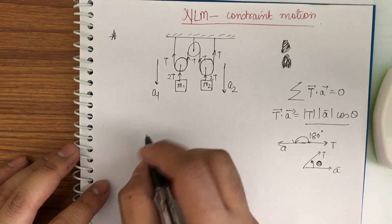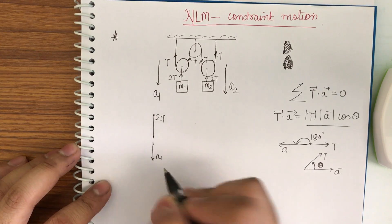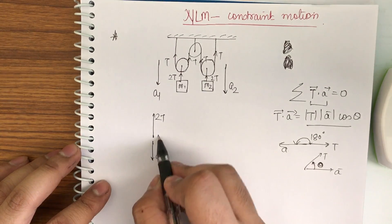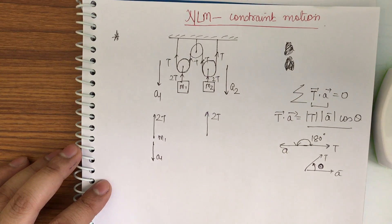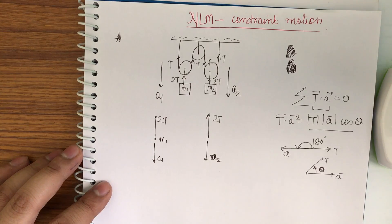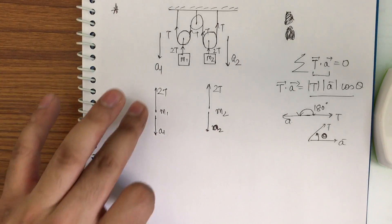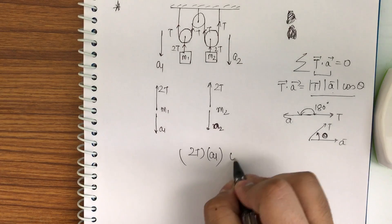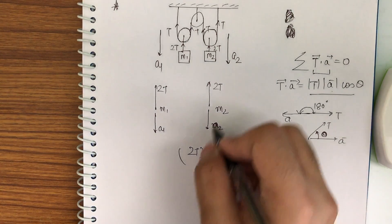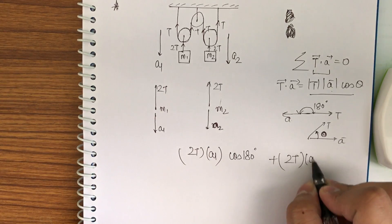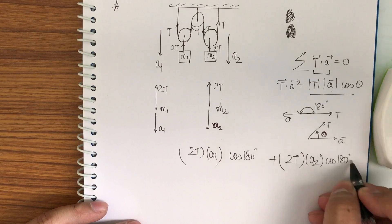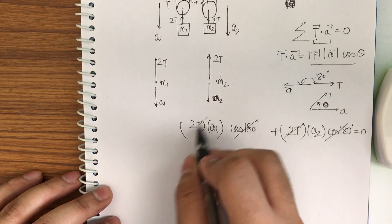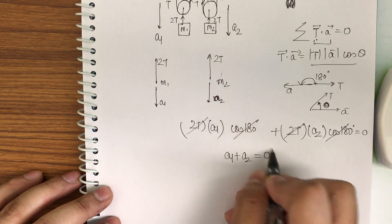Let me apply this for mass M1. Draw the tension and acceleration diagram — 2T will be upward and acceleration A1 is in the downward direction. For M2, it will be 2T upward and A2 in the downward direction. Now doing the summation: for M1 it is 2T into A1 into cos 180 degrees, and for M2 it is 2T into A2 into cos 180 degrees, and their sum equals 0. Since cos 180 is −1 and 2T cancels, we get A1 plus A2 equal to 0.